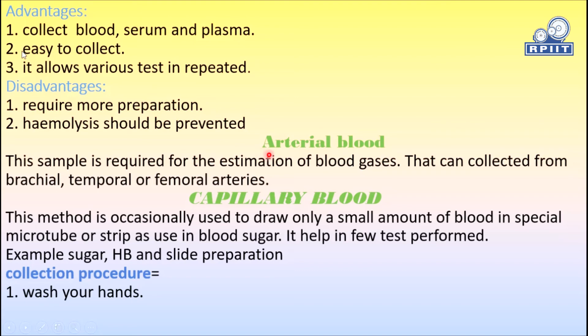Arterial blood: This sample is required for the estimation of blood gases. It can be collected from the brachial, temporal, and femoral arteries. It is most commonly used for blood gas analysis.